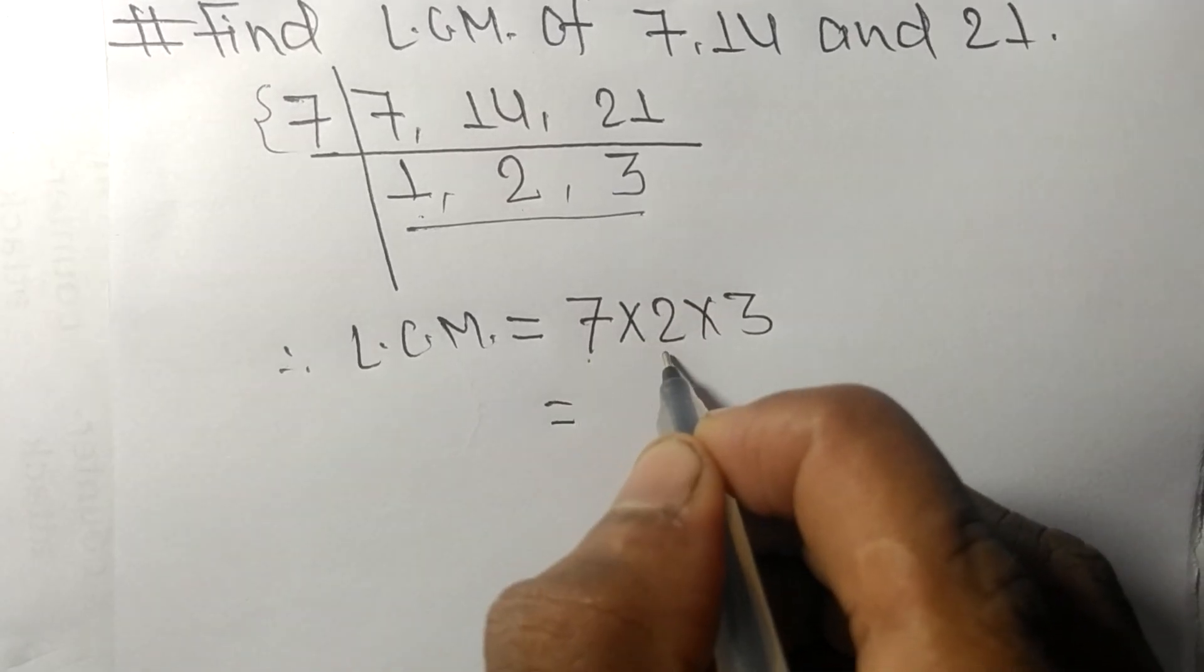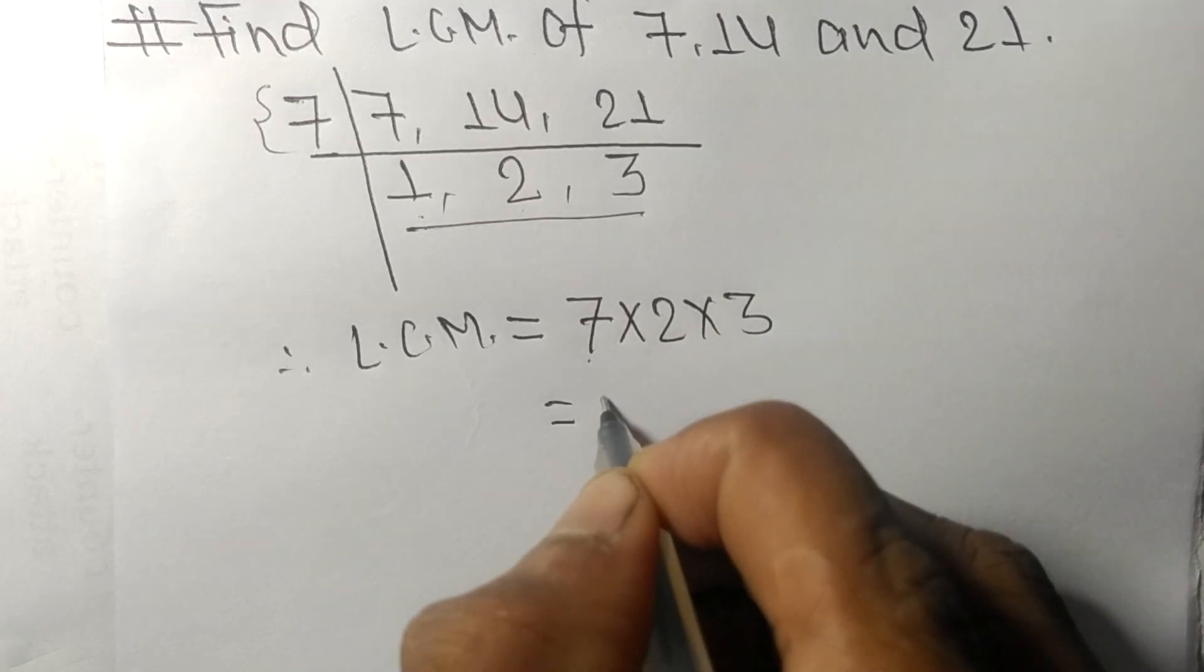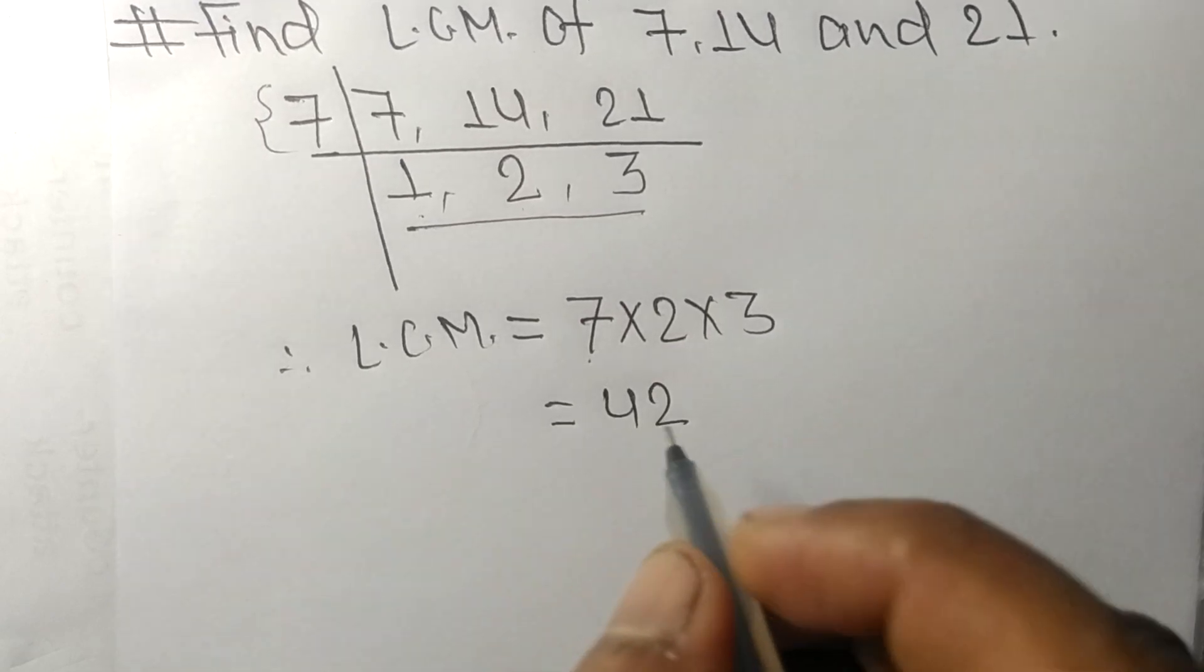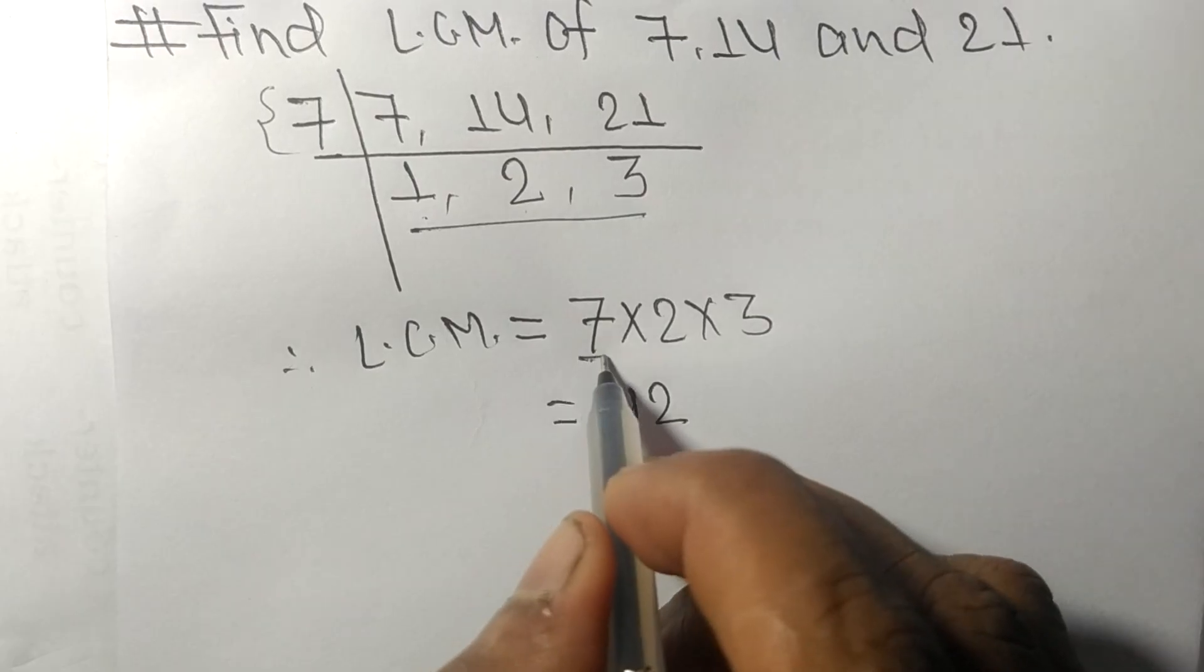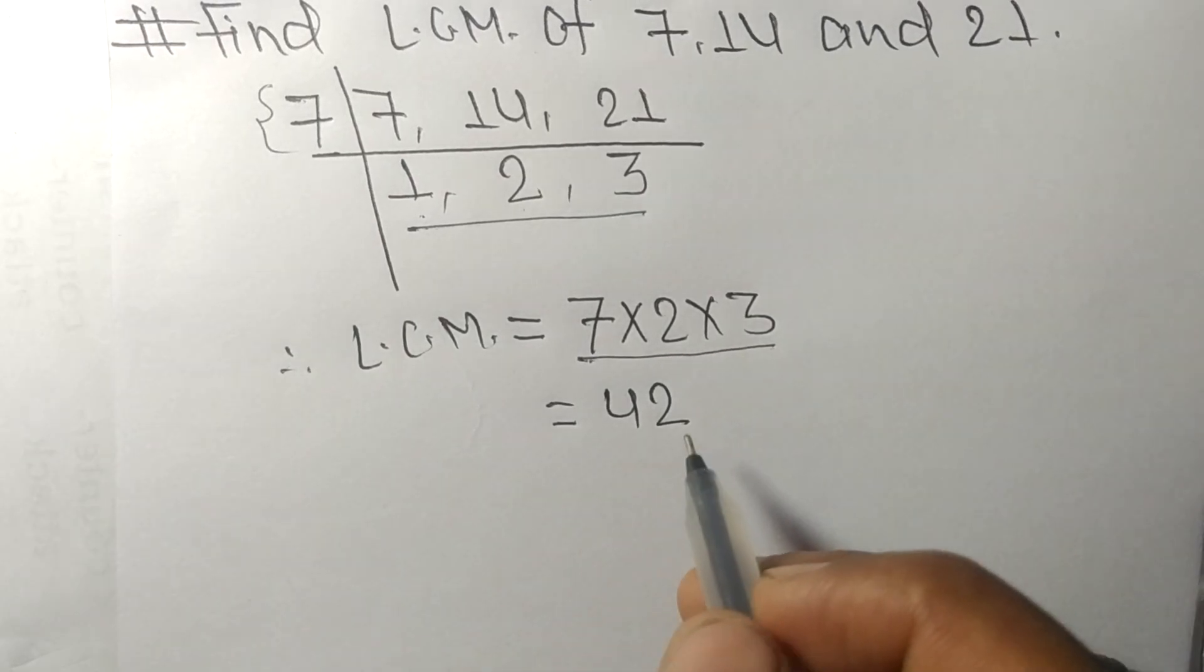7 times 2 means 14, 14 times 3 means 42. So by multiplying all these numbers we got 42.